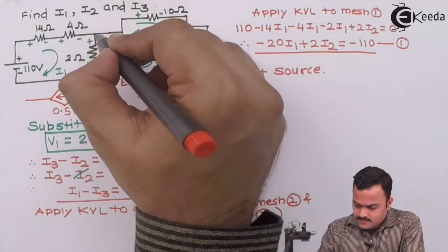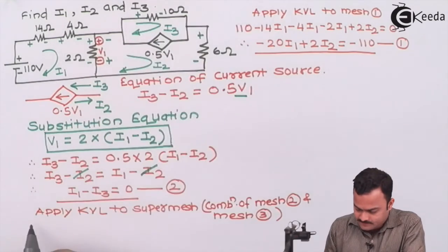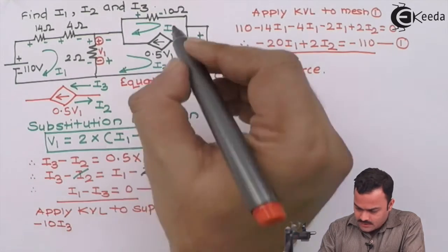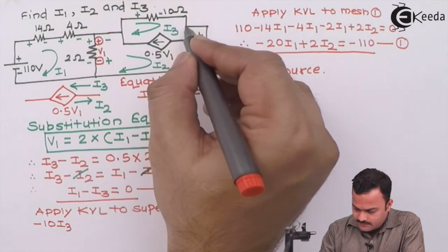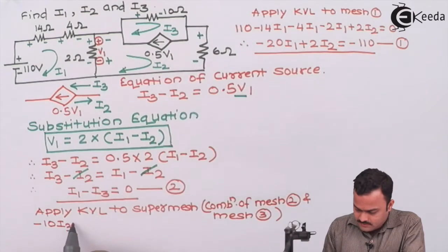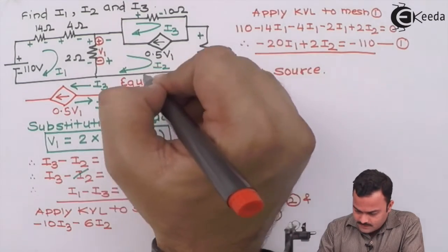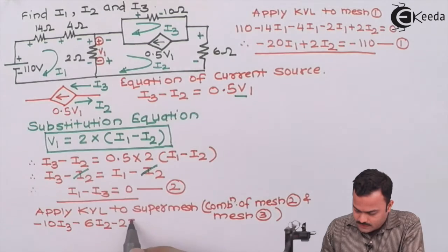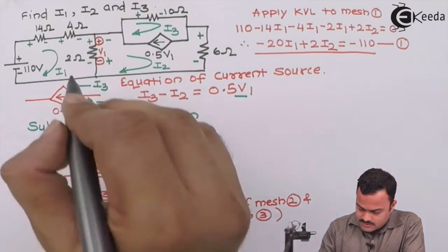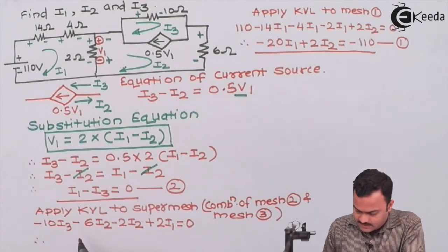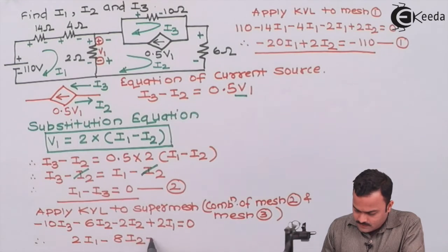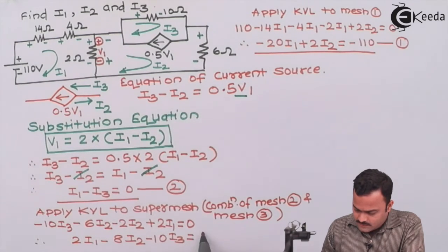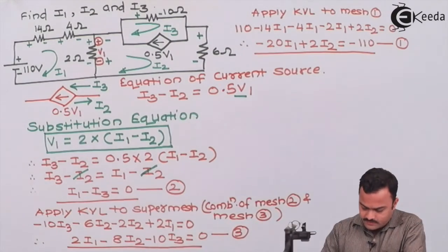Starting with mesh 3: minus 10i3, then bypassing the current source to the next element, the 6-ohm resistor: minus 6i2, then minus 2i2, plus 2i1 equals zero. After simplifying, we get equation 3: 2i1 minus 8i2 minus 10i3 equals 0.